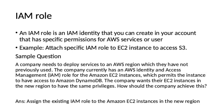Sample question: A company needs to deploy services to an AWS region which they have not previously used. The company currently has an AWS IAM role for their Amazon EC2 instances which permits the instance to access Amazon DynamoDB. The company wants the EC2 instances in the new region to have the same privileges. How should the company achieve this? There is an IAM role already attached to the current EC2 instances — the same IAM role can be used for the Amazon EC2 instances in the new region.